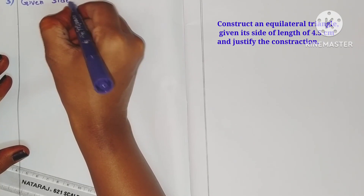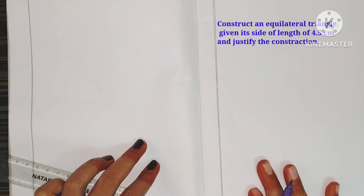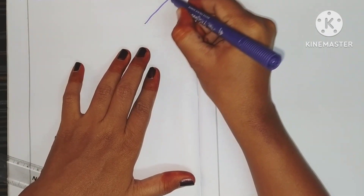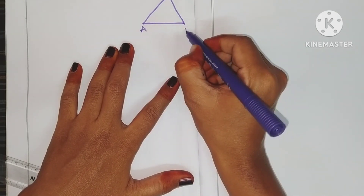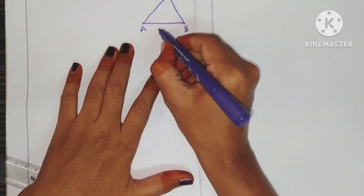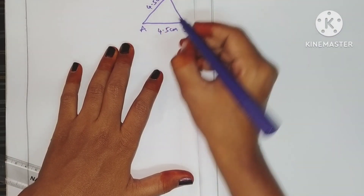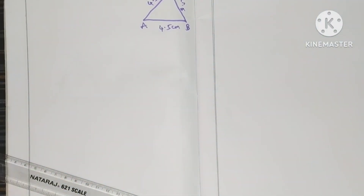The given side is equal to 4.5 centimeters. You already know that an equilateral triangle means the three sides are equal. So just draw the rough diagram — triangle ABC — where all three sides are equal in length: 4.5 centimeters, 4.5 centimeters, 4.5 centimeters. Now we have to construct the triangle, so take the scale.